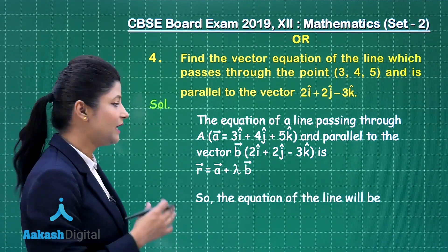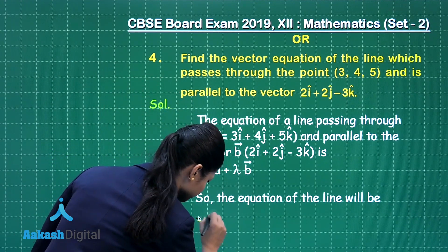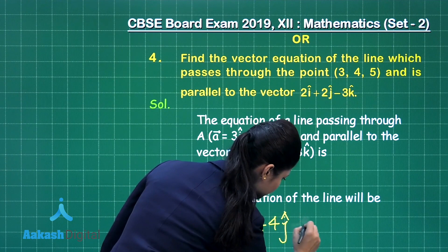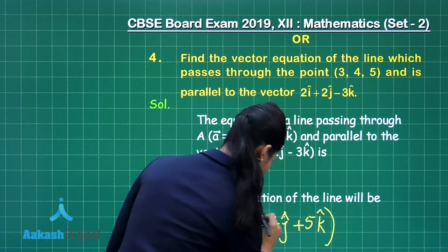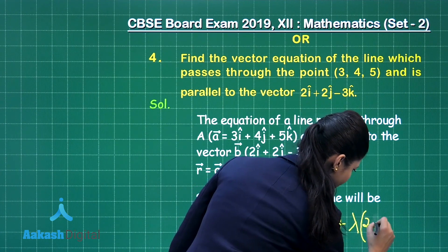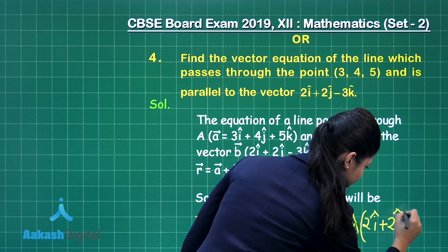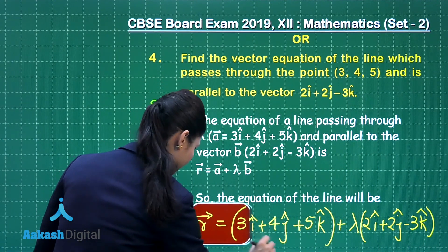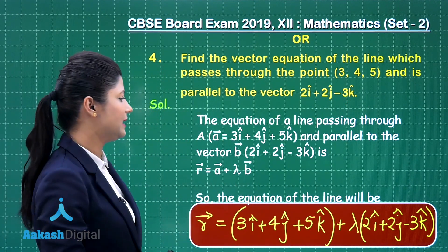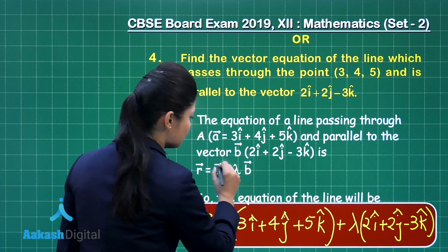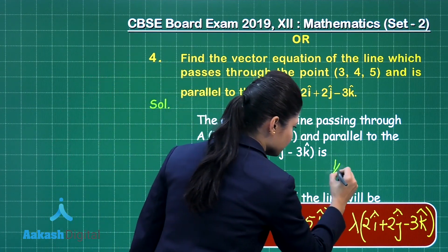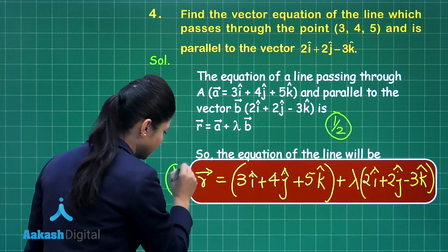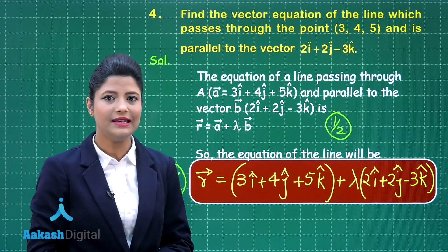Using this, I can obtain the equation of the required line as: R-vector = (3i-cap + 4j-cap + 5k-cap) + λ(2i-cap + 2j-cap − 3k-cap). This is the required equation of the line. If you write R = A + λB you will obtain half marks, and for finding the complete required vector equation you will obtain the remaining half mark, giving a total of 1 mark.